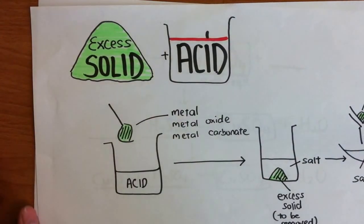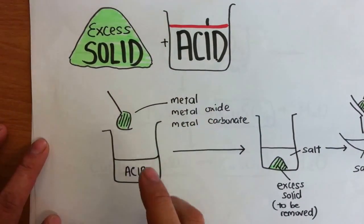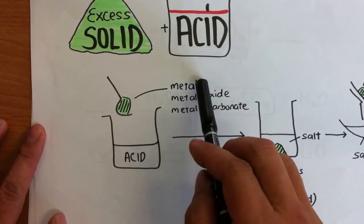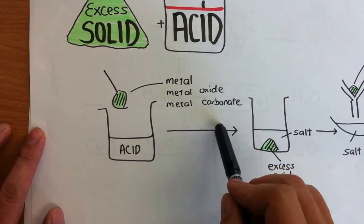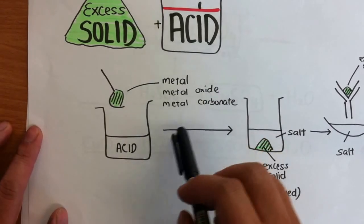This video is on the preparation of salts, using the method where we are adding solid to the acid. So usually when we are adding solid to the acid, we can add metal oxide or metal carbonate. Usually we try not to add metal hydroxide because sometimes they complicate the matters.